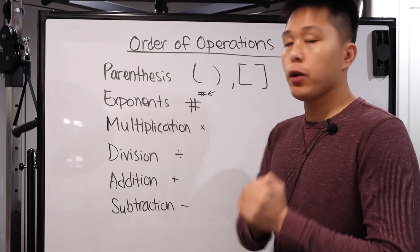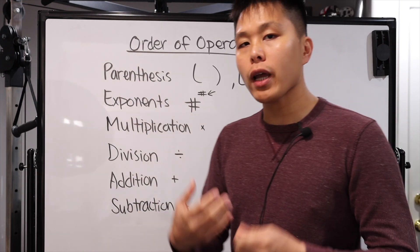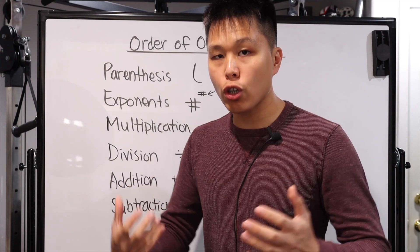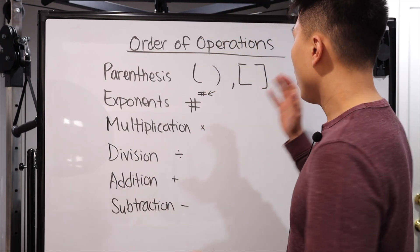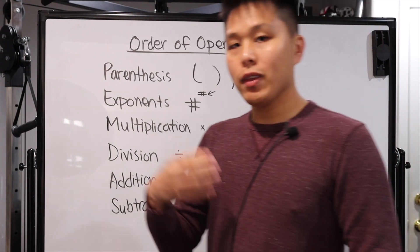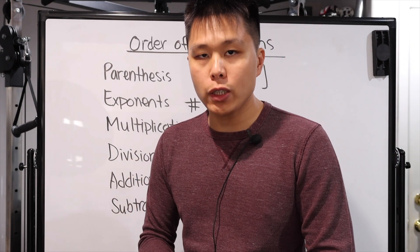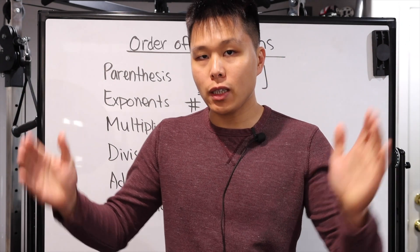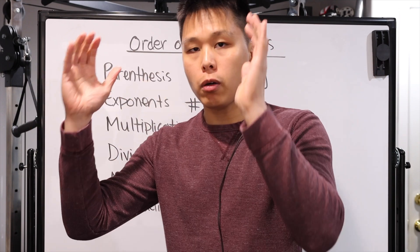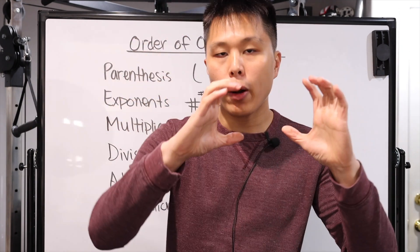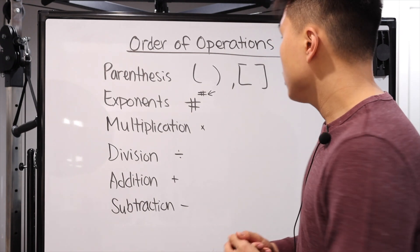We first start off with parentheses. Every time we look at an expression or an equation and we want to solve it, we want to work with the parentheses or brackets. That's another way for people to differentiate instead of putting a bunch of parentheses together. People will often put parentheses and brackets so that you can easily differentiate which parentheses belong to which.